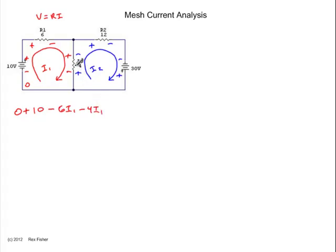So far, we have gone up 10 volts, and then we've dropped six times I1 volts. Now we flow down through R3, and we drop some more voltage, minus four times I1. But this resistor is different than R1, because R3 has two currents flowing in it. The red current flows down, causing a voltage drop. But the blue current flows up. And in the red loop, the voltage is increasing. So we need to add that voltage back in. Continuing around the loop, we're back at zero.